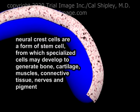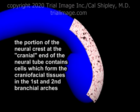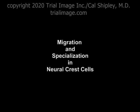Neural crest cells are a form of stem cell from which specialized cells may develop to generate bone, cartilage, muscles, connective tissue, nerves, and pigment. The portion of the neural crest located at the cranial end of the neural tube contains cells which will ultimately form the craniofacial tissues in the first and second branchial arches. Neural crest cells achieve this through the processes of migration and specialization.